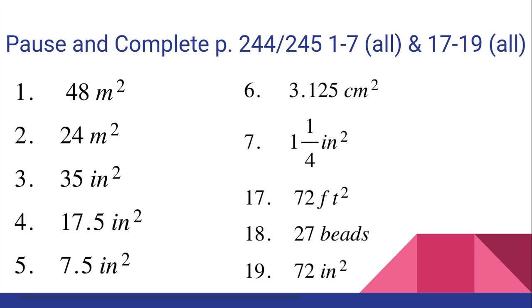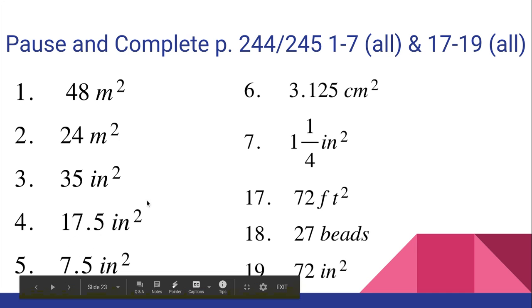Number three, a parallelogram, five times seven is 35 inches squared. Number four, five times seven, which is 35, but we have a triangle. So we have to divide it by two. So we should get 17.5 inches squared. Make sure we're putting the squared. That's only true for area. We don't do that if it's just the length of a side or if it's perimeter.